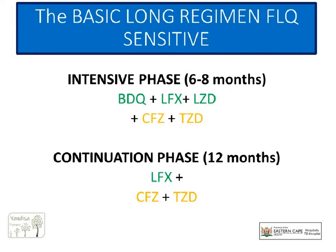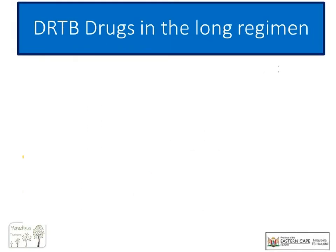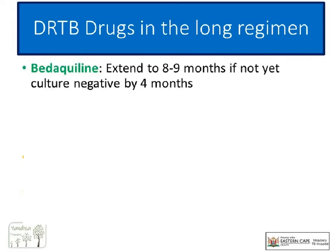If the patient is culture-negative by month six, they can be moved to a 12-month continuation phase of levofloxacin, clofazimine, and terizidone, with bedaquiline and linezolid completing after the six months. Bedaquiline is again a standard six-month course, but it can be extended in patients who are not culture-negative by four months. Linezolid is given with the bedaquiline for the full six months, so remember to keep an eye on the hemoglobin.